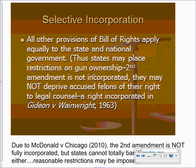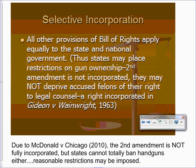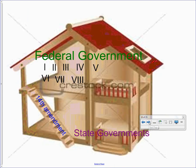All other provisions of the Bill of Rights apply to both state and national governments. The reason the Second Amendment is still in question is because in McDonald v. Chicago — and cities and states are viewed similarly for incorporation purposes — the Court ruled that people can impose reasonable restrictions on guns. You can't totally ban them, as that's a fundamental freedom, but you can put reasonable restrictions like waiting periods, trigger locks, and background checks. So the Second Amendment has been partially but not fully incorporated.